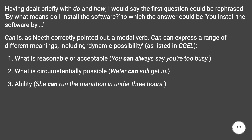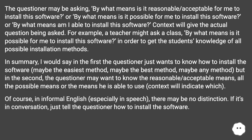'Can' is, as correctly pointed out, a modal verb. 'Can' can express a range of different meanings, including dynamic possibility as listed in GEL: what is reasonable or acceptable — 'you can always say you're too busy'; what is circumstantially possible — 'water can still get in'; and ability — 'she can run the marathon in under 3 hours.' The questioner may be asking by what means it is reasonable, possible, or they are able to install the software — context will give the actual question being asked.